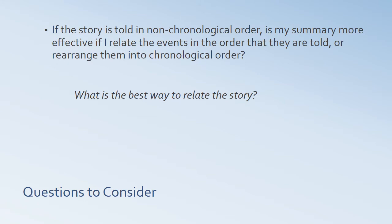If the story is told in a non-chronological order — which Sonny's Blues is — some stories jump around in their time scheme. A Rose for Emily is another. If it's told non-chronologically, is it more effective to relate the events in the order they're told, or rearrange them into chronological order? In Sonny's Blues, where we learn about something that happened decades before the main story, it's probably more effective to leave it in its non-chronological order. Whereas A Rose for Emily might be more effective, depending on what you want to communicate, to rearrange into chronological order.